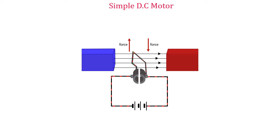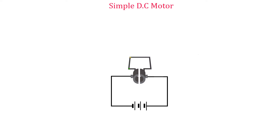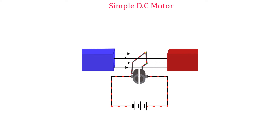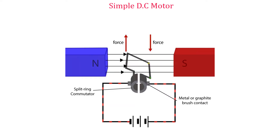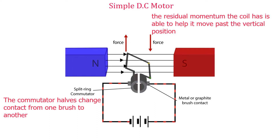If Fleming's left-hand rule is applied, we find that there will be an upward force acting on the left side of the coil and a downward force acting on the right side. These forces form a couple which causes the coil to turn in a clockwise direction until it is vertical. In the vertical position, the coil will no longer be in contact with the external supply because of the movement of the commutator with it. However, because of the residual momentum or inertia that the coil has, it is able to go past the vertical position until it becomes horizontal again.